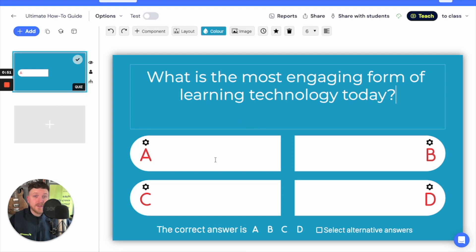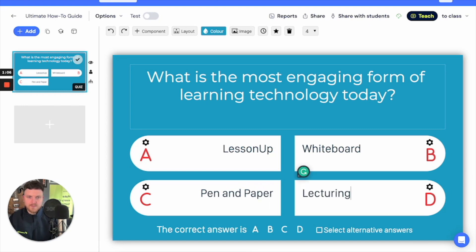Then I simply need to fill in the different answer options. Then after I've got my options in I need to select the correct answer or answers. Today I just have one correct answer so I'll select that there.